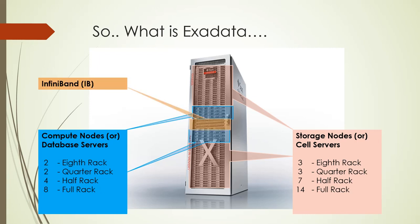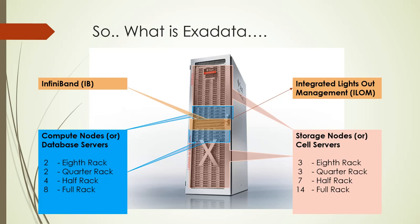The third component is InfiniBand, which provides network connectivity between storage nodes and database nodes. Each InfiniBand link provides 40 gigabytes of bandwidth, which is many times higher than the traditional storage or server network. There is another component called the Integrated Lights Out Manager, or ILOM. It provides advanced server processor hardware and software that you can use to manage and monitor your Sun servers. In case the server is having issues like being hung or needing a reboot, you can get console access for the host and reboot the servers remotely using the ILOM.